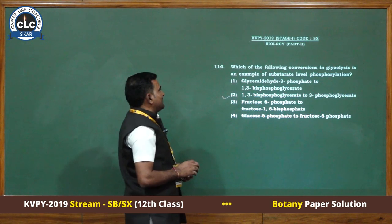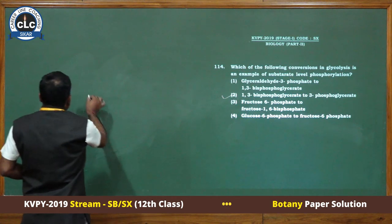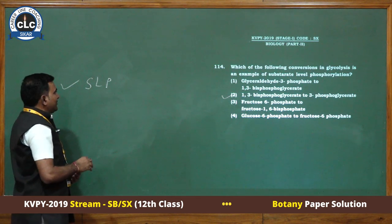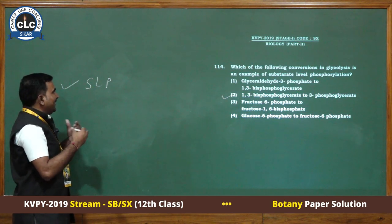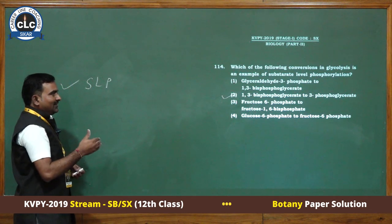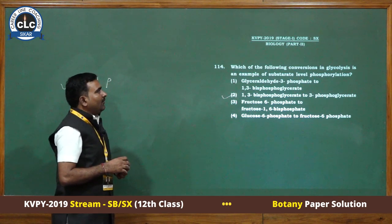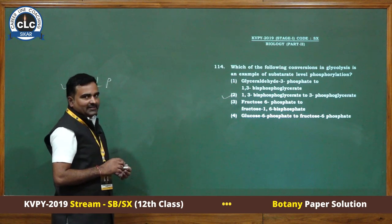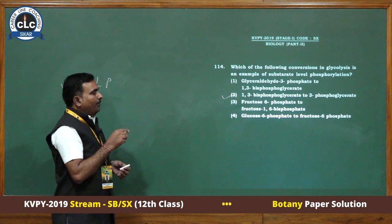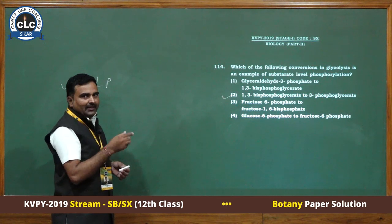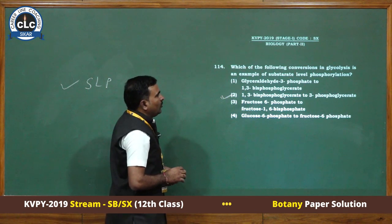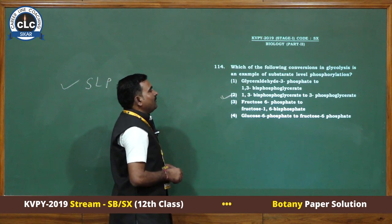Which one of the following conversions in glycolysis is an example of substrate level phosphorylation? Substrate level phosphorylation is a process when a substrate provides a phosphate group to ADP, resulting in direct ATP formation. In glycolysis, substrate level phosphorylation occurs at two places: first, when 1,3-bisphosphoglycerate converts into 3-phosphoglycerate (this reaction occurs twice per glucose, giving 2 SLP); and second, when PEP (phosphoenolpyruvate) converts into pyruvic acid (also 2 SLP). The correct answer is when 1,3-bisphosphoglycerate converts to 3-phosphoglycerate — this is the 7th step in glycolysis.